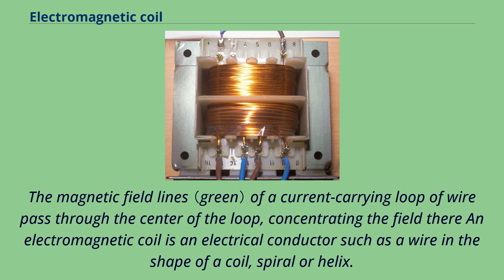The magnetic field lines of a current carrying loop of wire pass through the center of the loop, concentrating the field there. An electromagnetic coil is an electrical conductor such as a wire in the shape of a coil, spiral or helix.